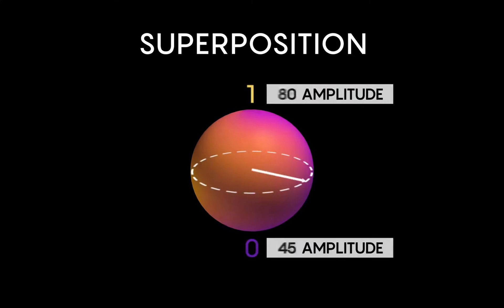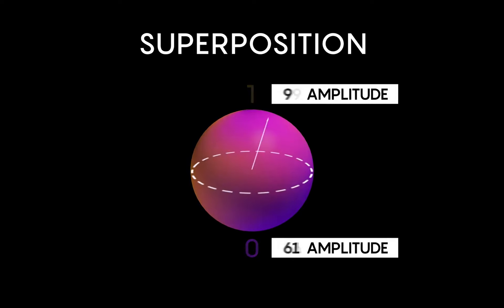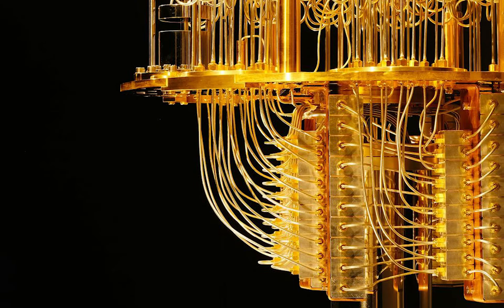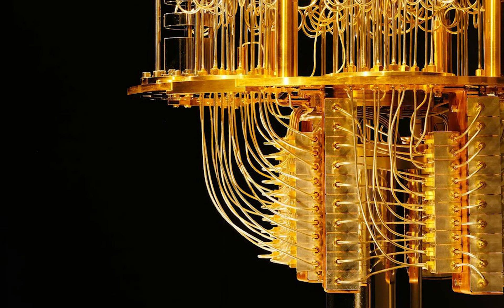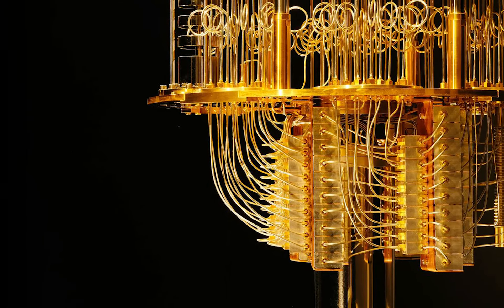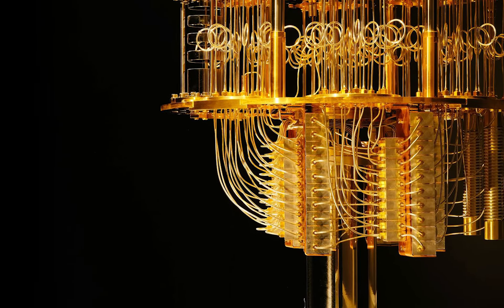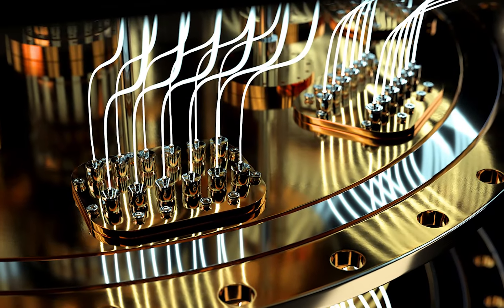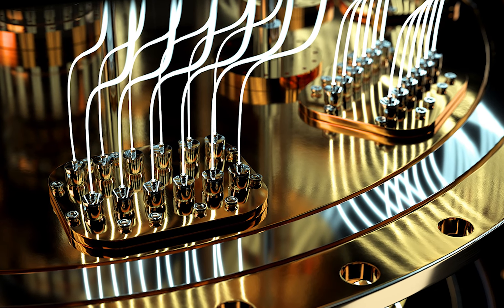When measuring a qubit, the result is a probabilistic output of a classical bit. If a quantum computer manipulates the qubit in a particular way, wave interference effects can amplify the desired measurement results.